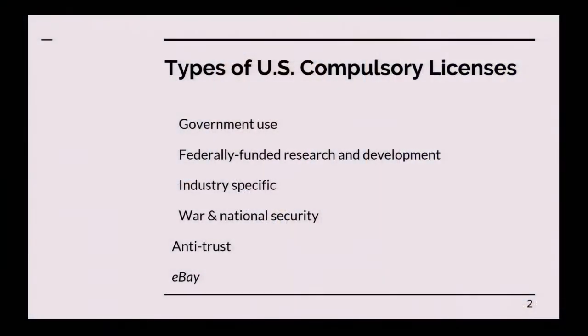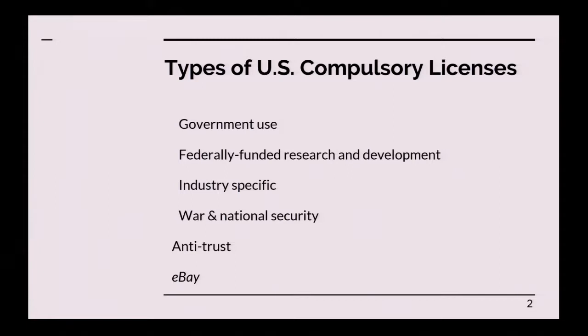The Sherman Antitrust Act had been passed in the late 1800s, and there was rapid industrialization and concerns about expanding U.S. industry. Then during the World Wars, there were some proposals for compulsory licenses in the context of national security and defense. Following the wars, the government had invested a lot in research and development and worked with industry and universities, and there were proposed compulsory licenses to address that.